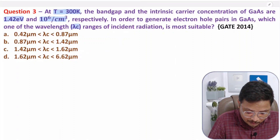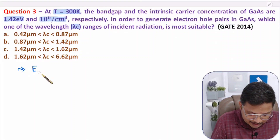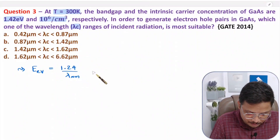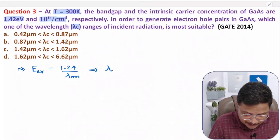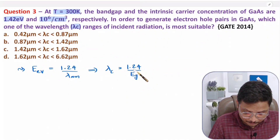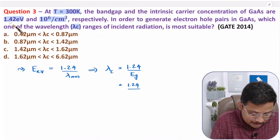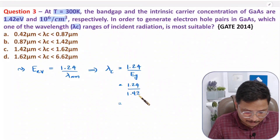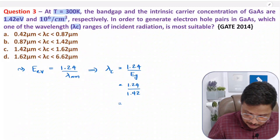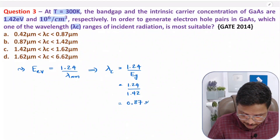Using the formula: energy in electron volt equals 1.24 divided by wavelength in micrometer, we can express wavelength in micrometer as 1.24 divided by energy. Here we are talking about λC, so λC = 1.24 divided by EG. Substituting EG = 1.42 electron volt: 1.24 divided by 1.42 gives λC = 0.87 micrometer.